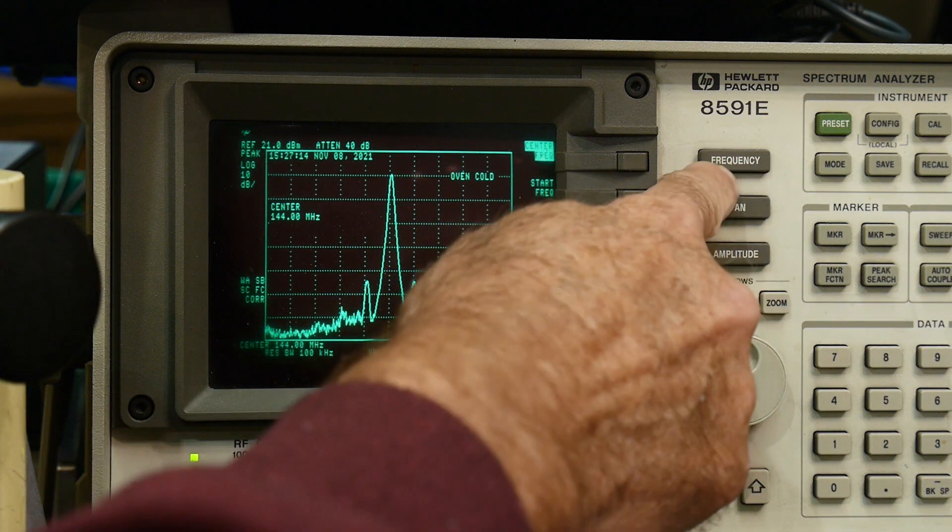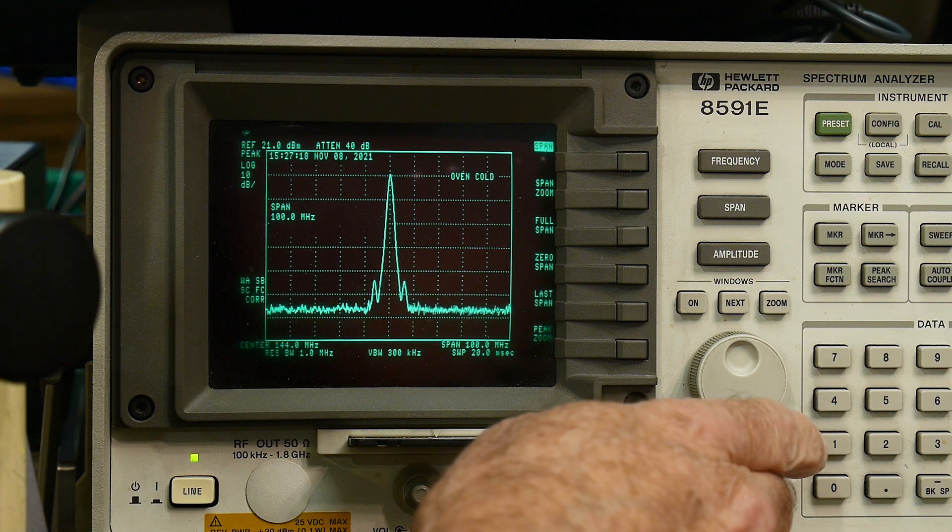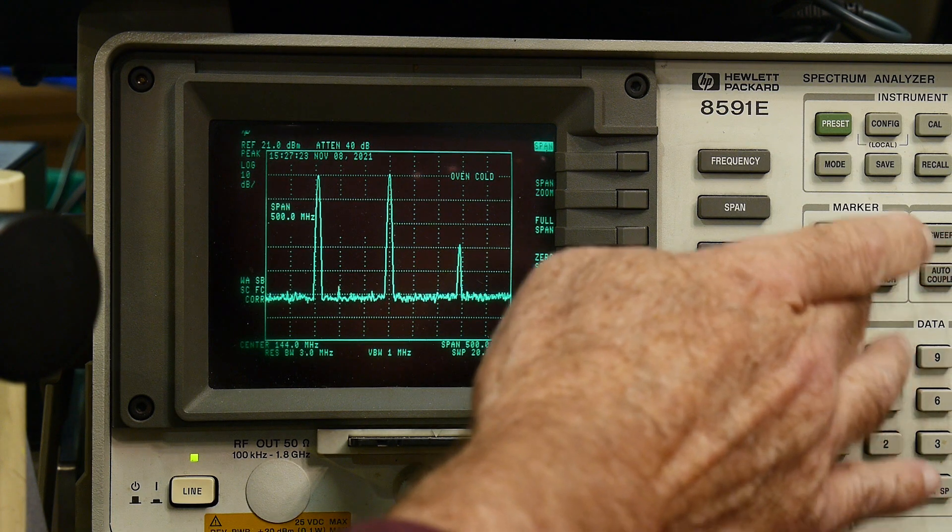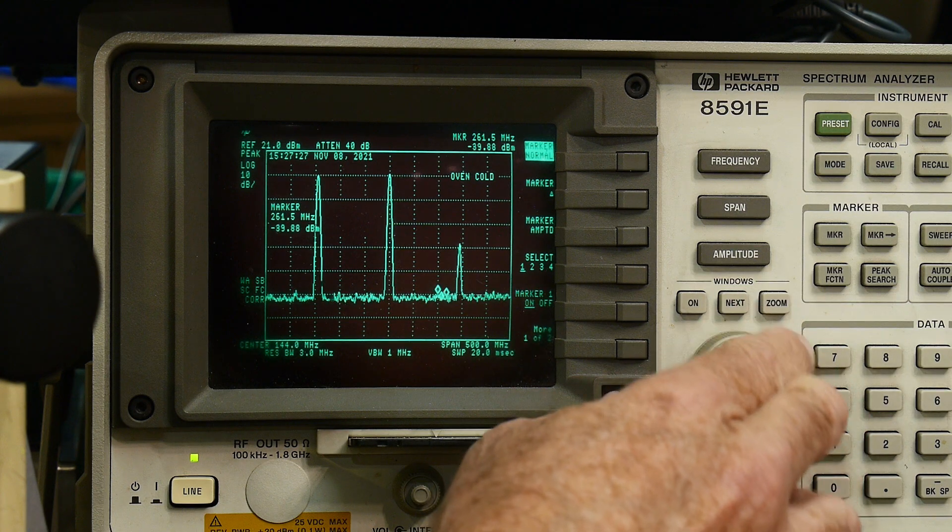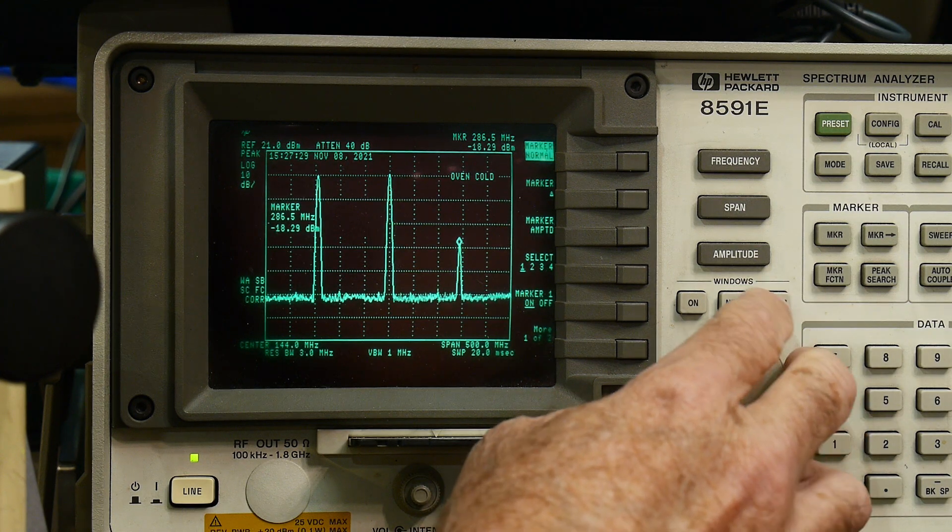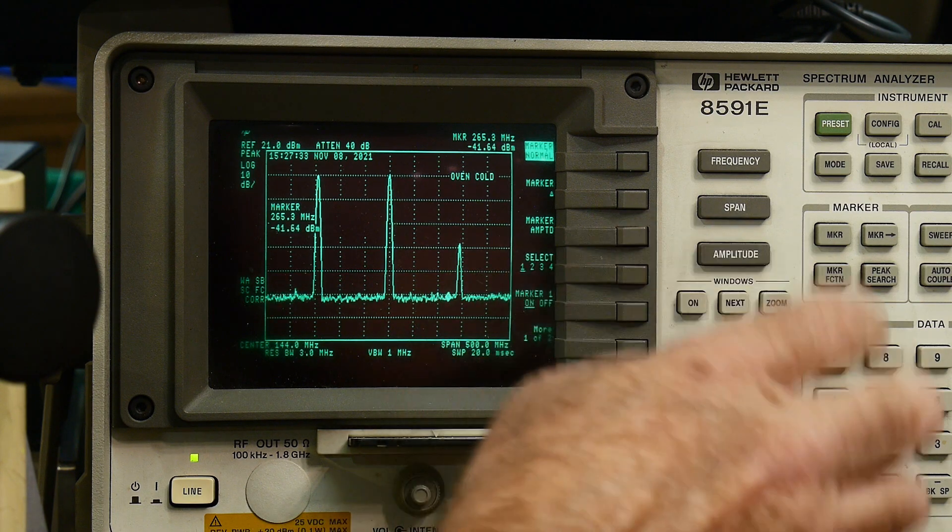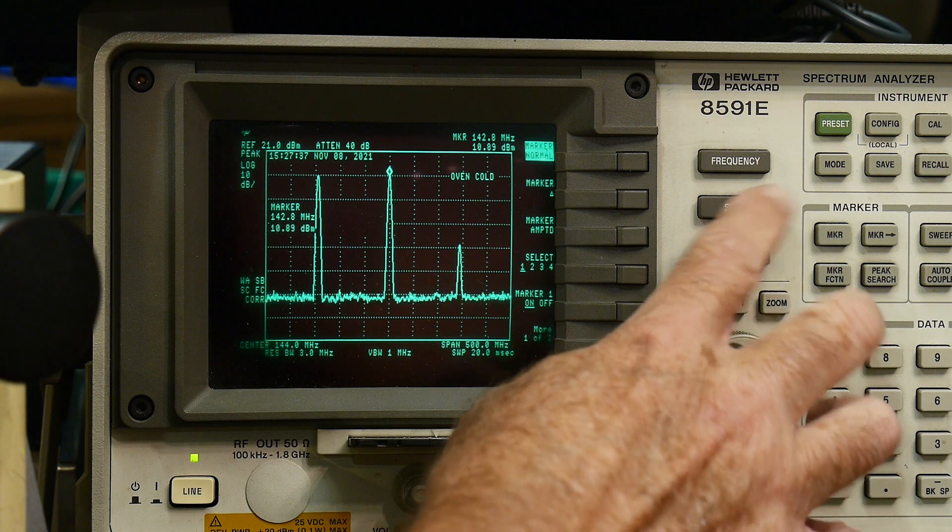All right, let's span back out. And there is a marker over here. Let's see. This is at 288. So that's the double. So that makes sense. All right, let's zoom back in here. Oops.